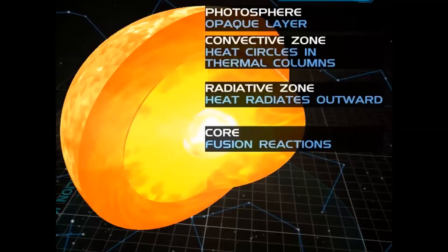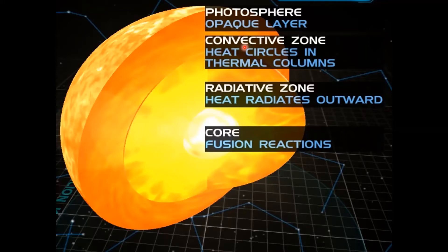There are four layers of the Sun. The first is the core, or the innermost layer. The second layer is the Radiative Zone. The third layer is the Convective Zone. The outermost layer is the Photosphere.